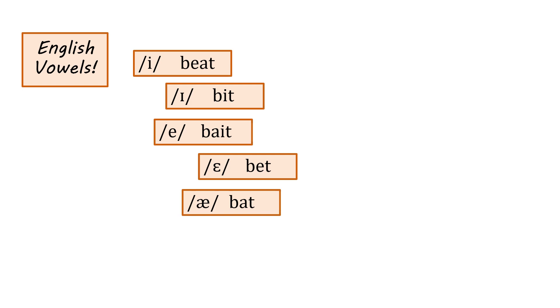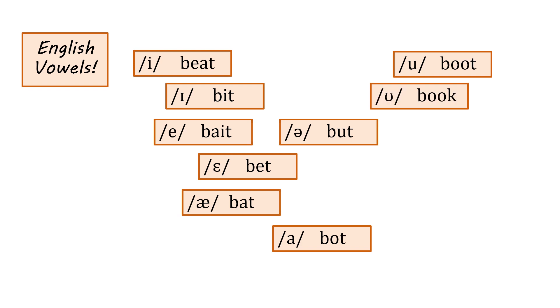æ as in bat. ɑ as in bot. u as in boot. ʊ as in book. This is a very common vowel in terms of how often we produce it but it's not actually in very many words. o as in boat. ɔ as in bought.